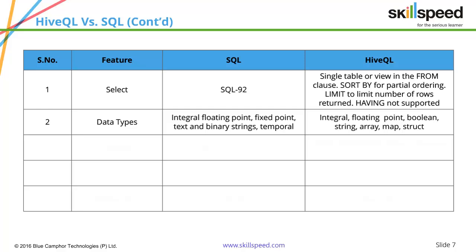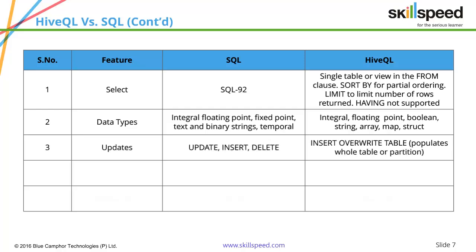Looking at the update functionality: in SQL you can update, insert, and delete, whereas in Hive you only have INSERT OVERWRITE TABLE, which will basically delete everything and override the table. Regarding built-in functions, SQL has hundreds of built-in functions, whereas in Hive you have only a dozen of them available.